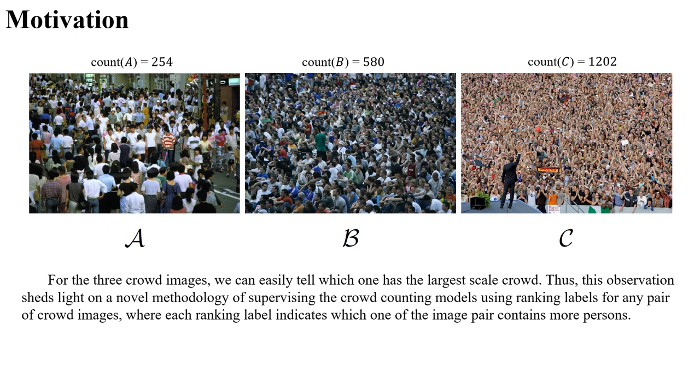Thus, this observation sheds light on a novel methodology of supervising the crowd counting models using ranking labels for any pair of crowd images, where each ranking label indicates which one of the image pair contains more persons.